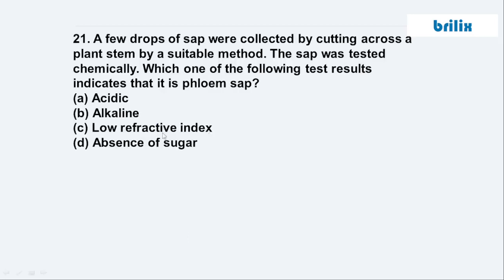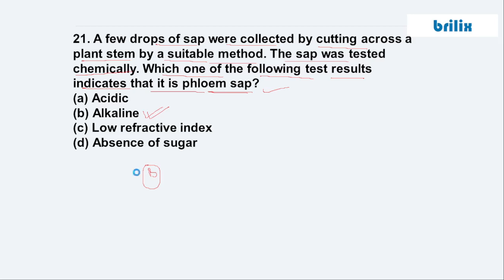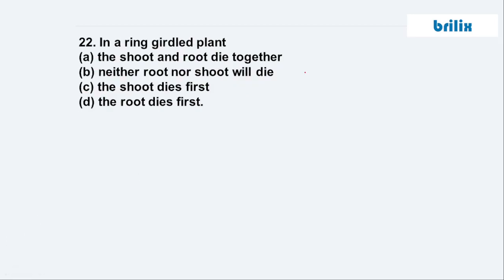Question 21: A few drops of sap were collected by cutting across a plant stem by a suitable method. The sap was tested chemically. Which one of the following test results indicates that it is a phloem sap? The phloem sap will show an alkaline nature of pH — if tested, it would definitely be alkaline in nature. So the answer is option B.